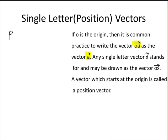For example, if you have the vector P, this stands for the vector OP. So it starts at the point O and goes to P, where O is the origin.